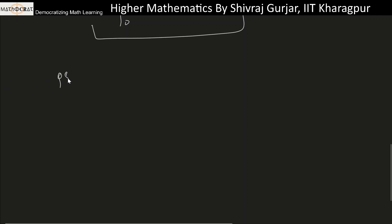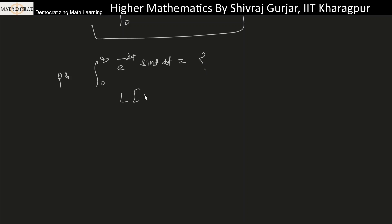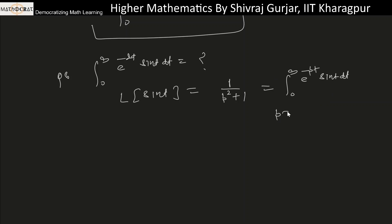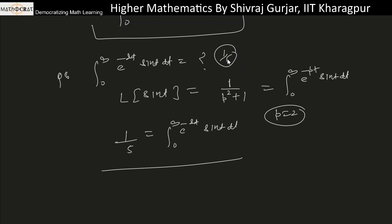The question is: find the value of the integral from 0 to infinity of e^(-2t)·sin(t)/t dt. This is nothing but a Laplace transform application. We know that the Laplace of sin(t) is 1/(p²+1). So we can write: the integral from 0 to infinity of e^(-pt)·sin(t) dt equals 1/(p²+1). Putting p=2, the integral from 0 to infinity of e^(-2t)·sin(t) dt equals 1/5.